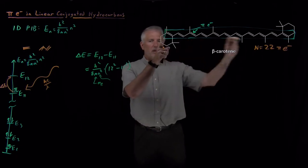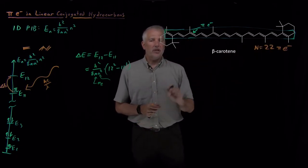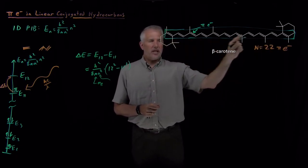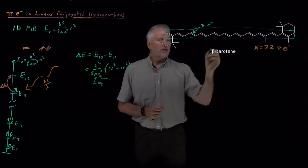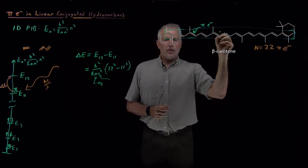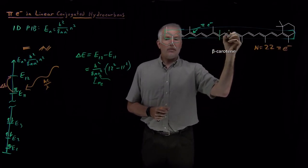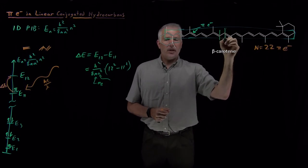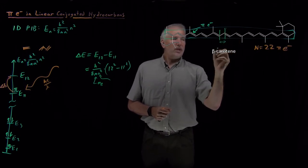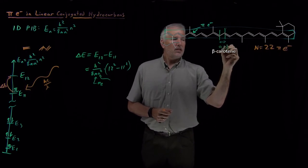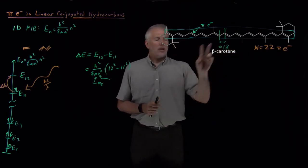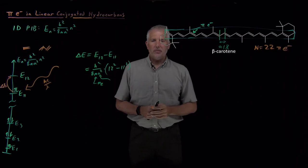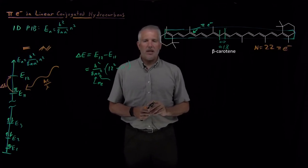And A, the box length, we need to know how long this molecule is, in particular how long the conjugated backbone portion of the molecule is. So we'll come up with just a rough estimate for that, and I'll tell you that the distance between carbons along the backbone of this molecule is about 1 angstrom, or about 10 to the minus 10 meters.